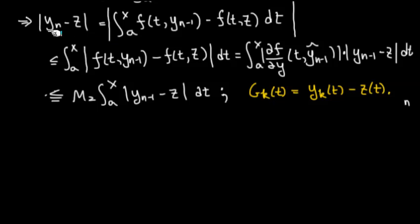I abbreviated this as gap. It's gap gk, so gkt is the difference between these two values, ykt and zt. The above statement can be summarized as: bound of gap gn is less than or equal to m2 times the integral of gap gn minus 1.